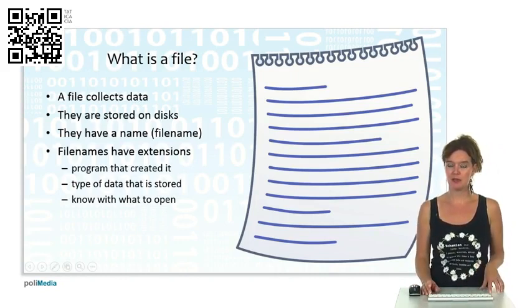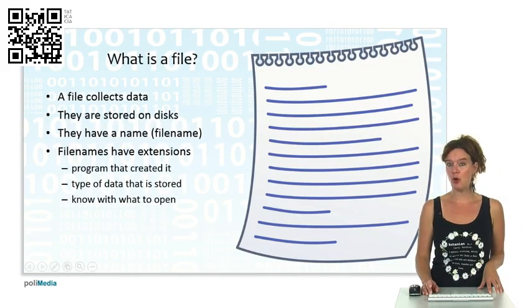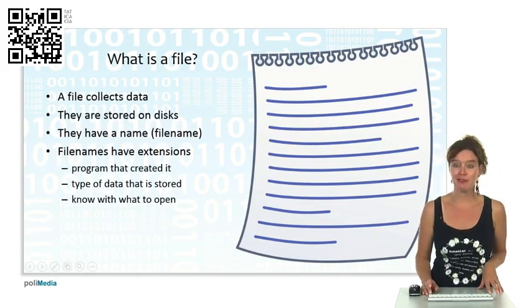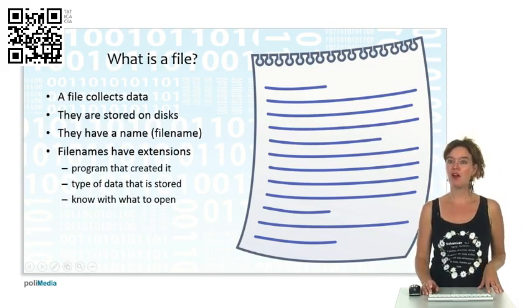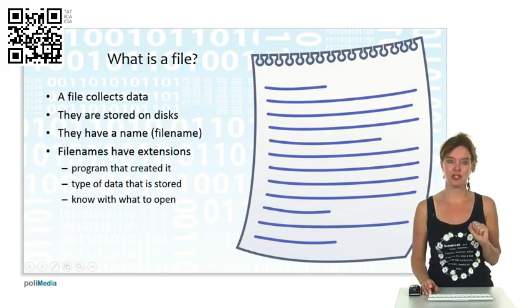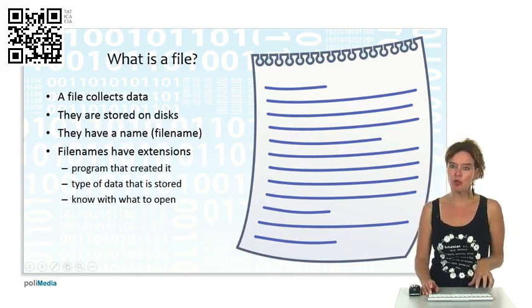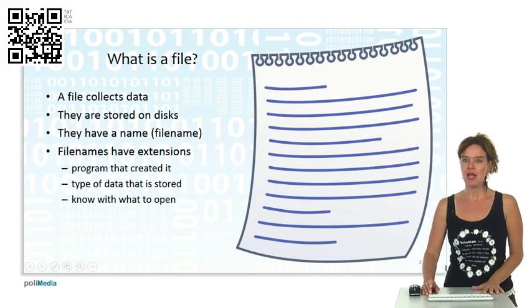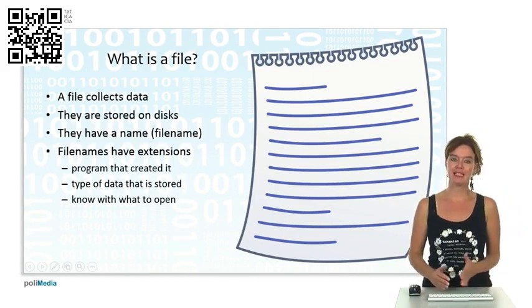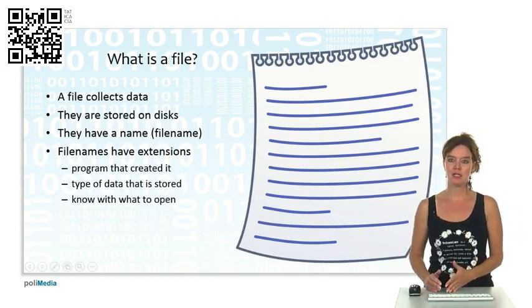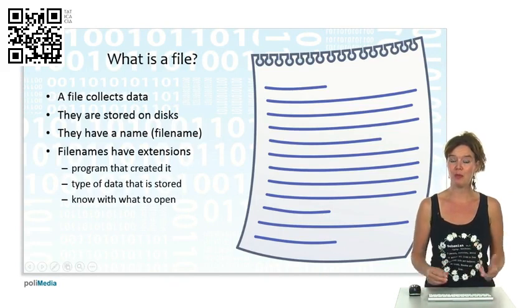They're stored on disk, and in order to know where it is and find it, files have a filename. These filenames have extensions that you might have seen. They depend on the program that created it and on the type of data that is stored in the file, so we know which program we can open it with.